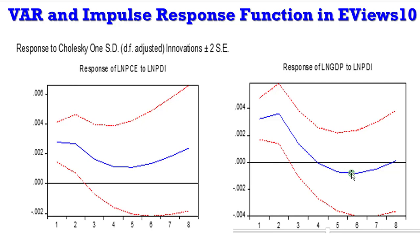GDP remains negative through period 5 and 6, and we can also see a gradual increase from period 6, even though values are still all in the negative zone. So the simple interpretation is that at the earlier stages GDP increases, then it declines, becomes negative, and gradually picks up. That is the response of GDP to a one standard deviation shock to PDI.